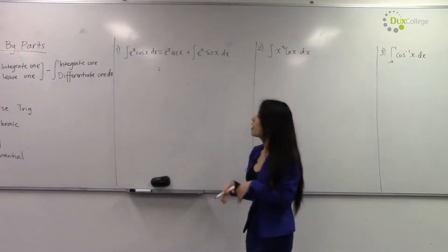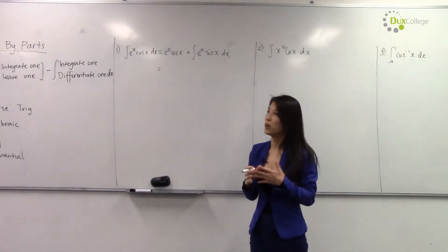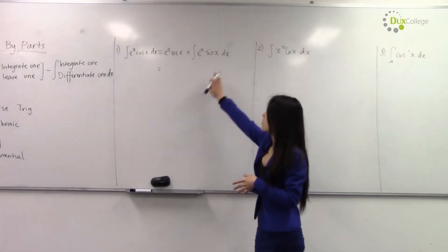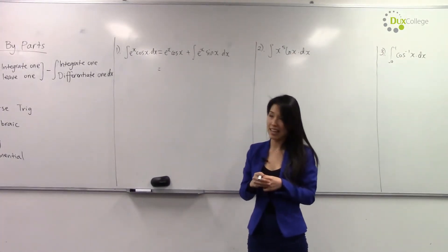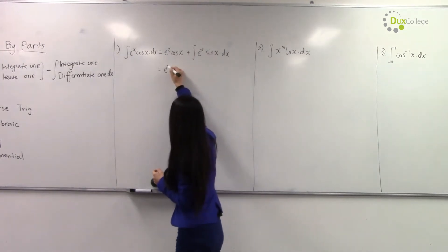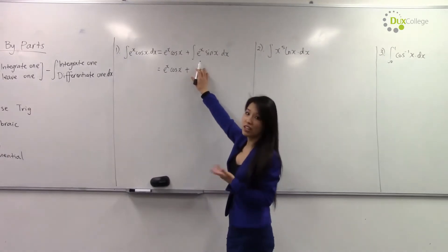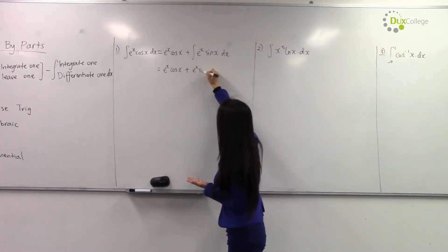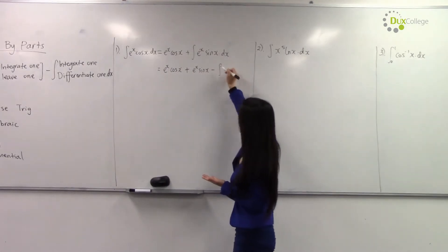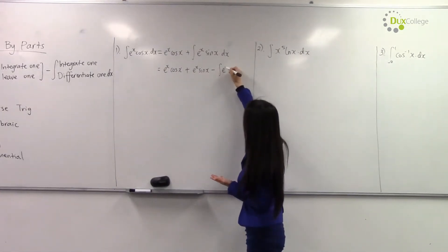As you can see, we still need to do further work to solve this problem. For this second part, we need to use integration by parts again. We integrate e^x, leave sin, subtract, integrate e^x, differentiate sin.